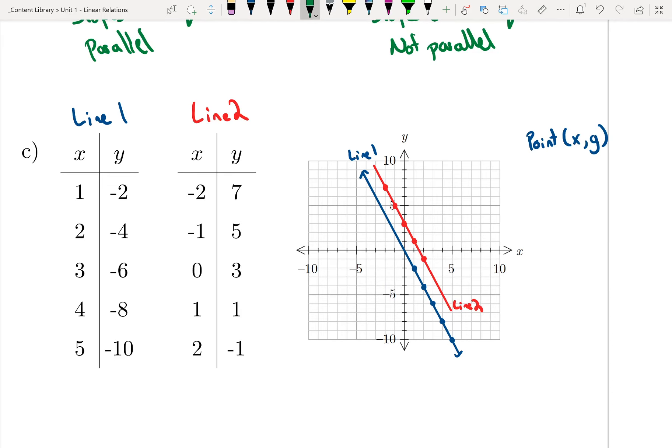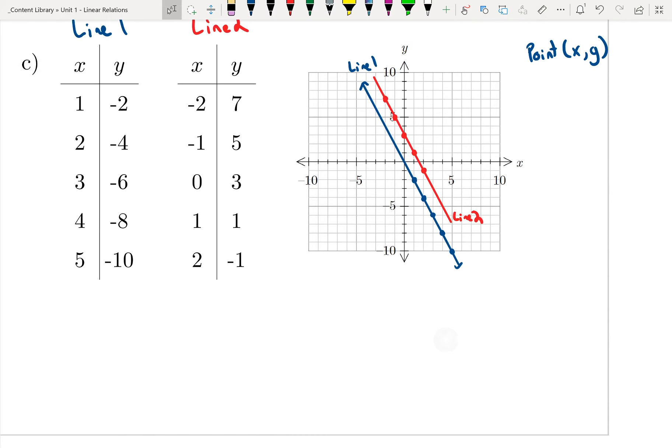Now I need to determine my slopes. So I need to determine the slope for line 1 and the slope for line 2. Remember slope is rise over run. And once I figure out the slope, then I can determine whether they're parallel or not.